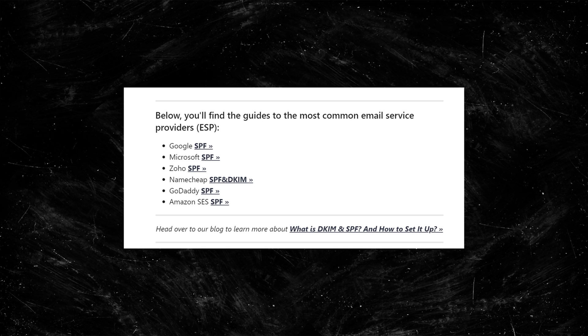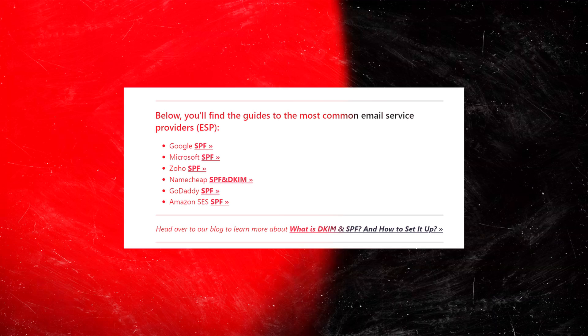To set up SPF, you need to have access to your DNS and add a proper record, which you can find on the help pages of your email provider. In this video, I'll show you how to set it up on a Google Workspace account. But if you use other providers, check the description for a help article where we include links to SPF guides for other email providers like Microsoft or Zoho.